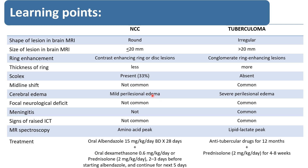Perilesional edema in NCC also depends on its stage — if the patient is in the calcified stage or cystic vesicular phase, there will be no edema. Focal neurological deficit is not common with NCC but common with tuberculoma. Signs of meningitis are not seen with NCC but are common with tuberculoma — the patient may have tuberculoma with TBM. Signs of raised ICP are not seen with NCC but are common with tuberculoma. MR spectroscopy is very specific to differentiate these two: amino acid peak is present with NCC, while lipid-lactate peak is present with tuberculoma.